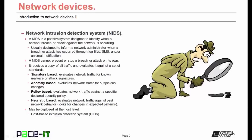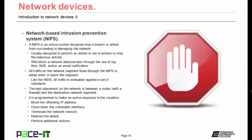The standard may be heuristic-based, which means it evaluates network traffic against past network behavior, looking for changes in expected patterns. The intrusion detection system may also be deployed at the host level; when placed on a host, it's called a HIDS. Then there's the Network-Based Intrusion Prevention System, or NIPS. A NIPS is an active system designed to stop a breach or attack from succeeding and damaging the network, and is usually designed to perform an action or set of actions to stop malicious activity.